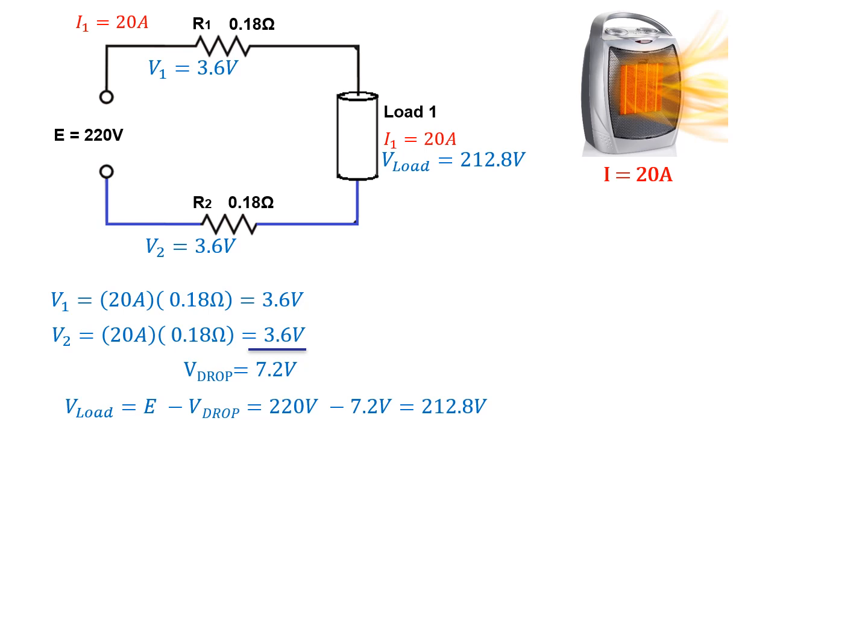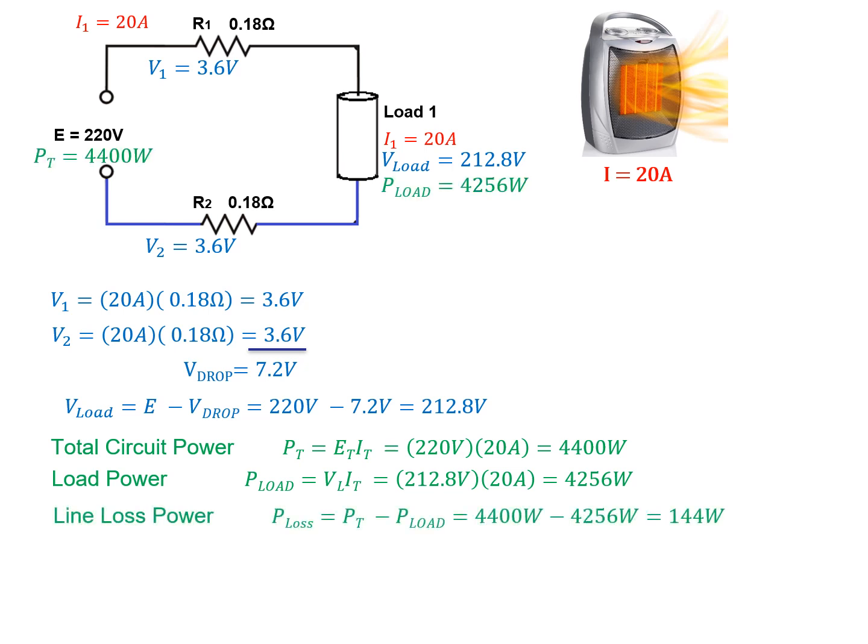Now that we have a load voltage, we can calculate all the powers. Total circuit power, ET times IT, well it's going to give us 4.4 kilowatts. The load power or the output power, well just multiply the voltage by the current, and that'll give us 4256 watts. The difference between those two will be our line loss, which gives us 144 watts dissipated by our two wires together, which means that each wire is going to dissipate 72 watts individually.